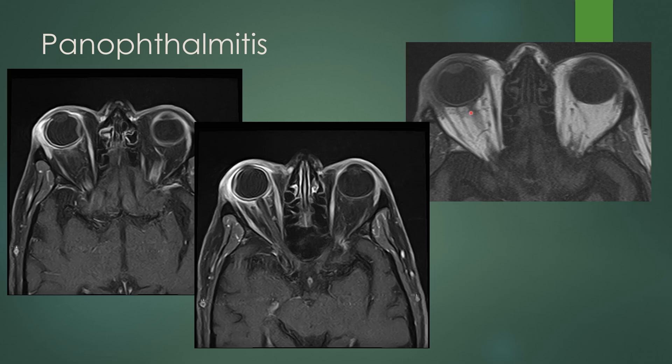You can get it more focal — you can have a posterior scleritis, which almost looks like nodular thickening of the sclera and can be confused for a scleral melanoma or uveal melanoma. You can also get an endophthalmitis, which is uveal thickening and enhancement.